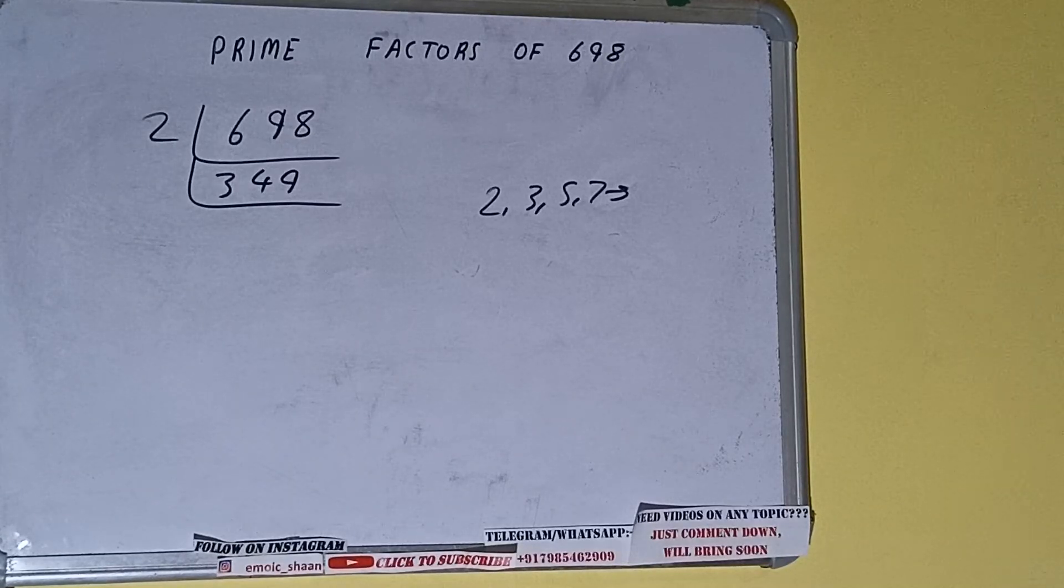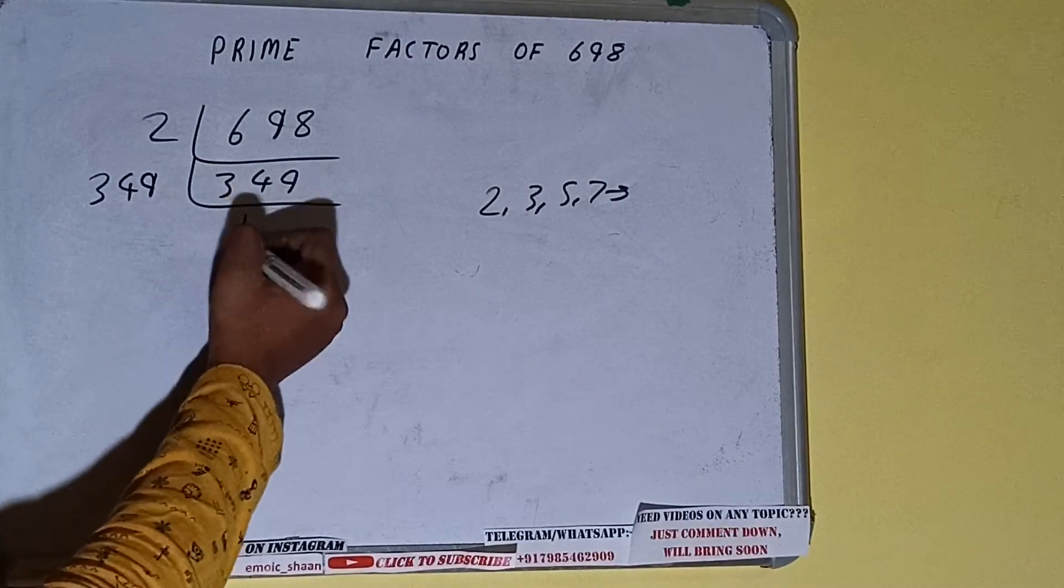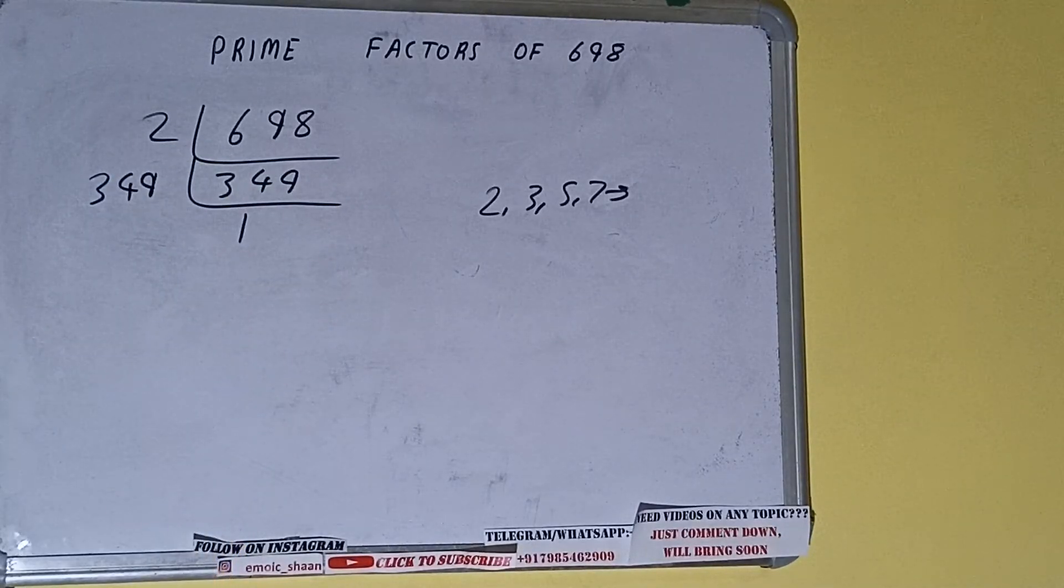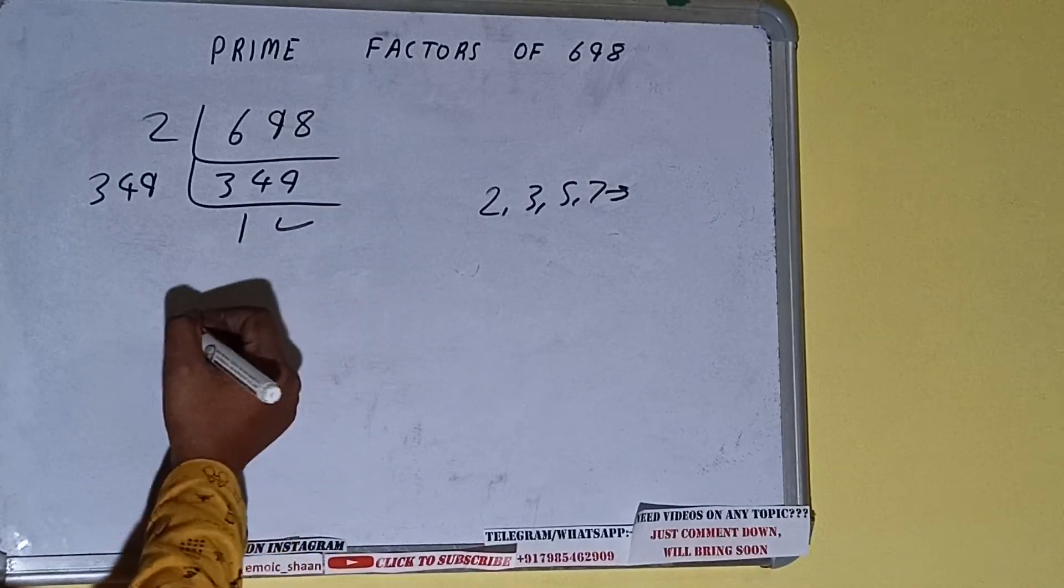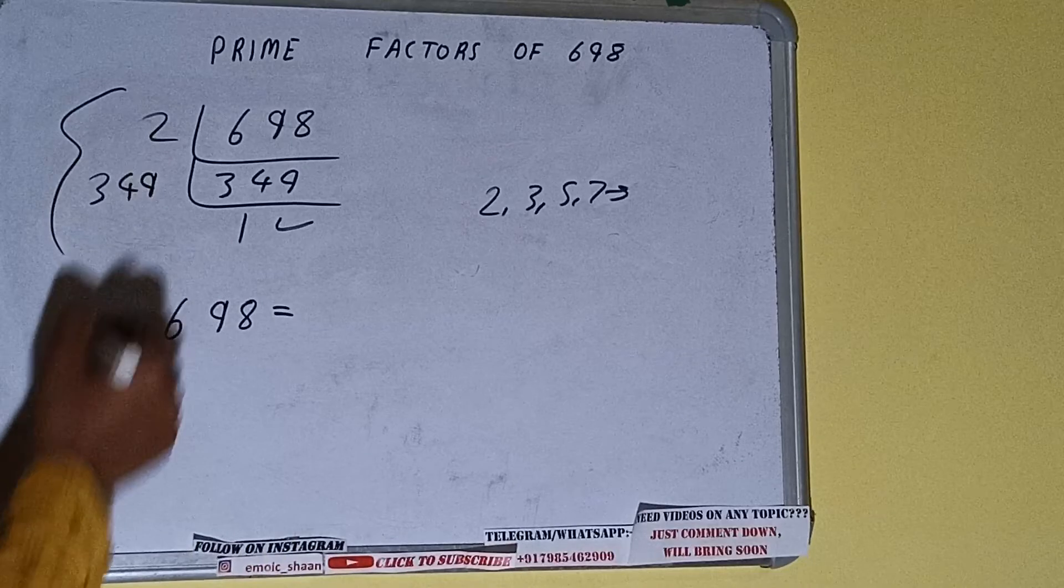That is 349. Once we do so, we'll be getting 1. Once we get 1, we need to stop and do one last thing. That is, prime factors of 698 equals multiply whatever we have on the left-hand side. That is 2 × 349. That will be the answer.